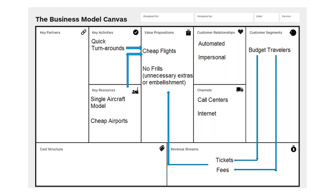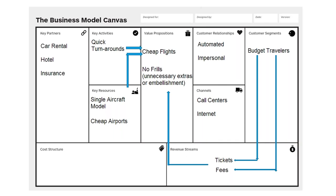For key activities, one of the key activities Cheapo Airlines does is quick turnarounds — meaning that once they land, they do everything in the most efficient way possible to be back in the air again, making the most trips per day. That means landing, getting people off the plane, and starting another trip right away. Quick turnarounds are a key activity that helps keep the value proposition of cheap flights in place. You can see the arrows connecting the single aircraft model, cheap airports, and quick turnarounds to the value proposition — all of these allow them to actually offer cheap flights.